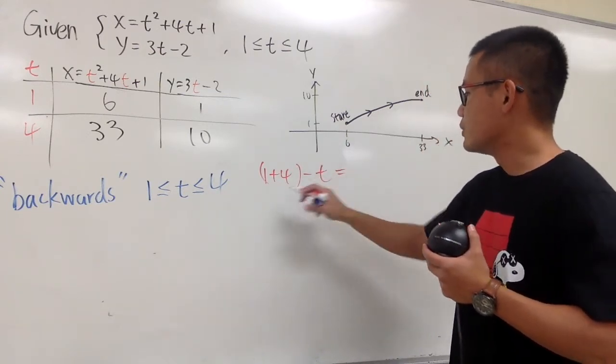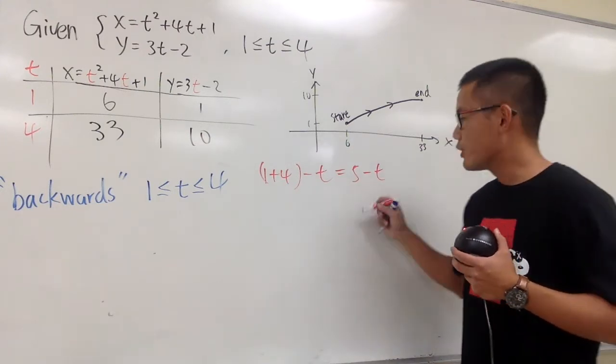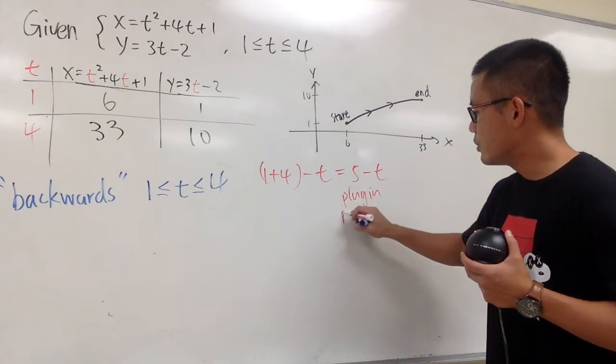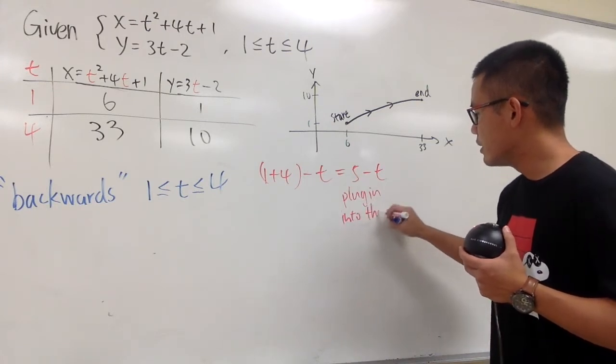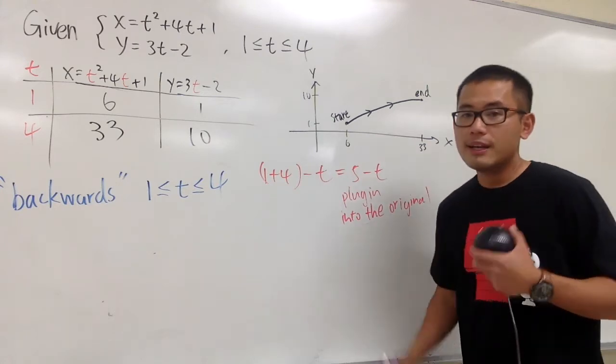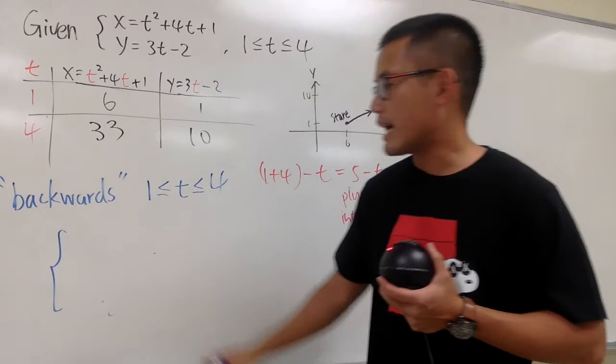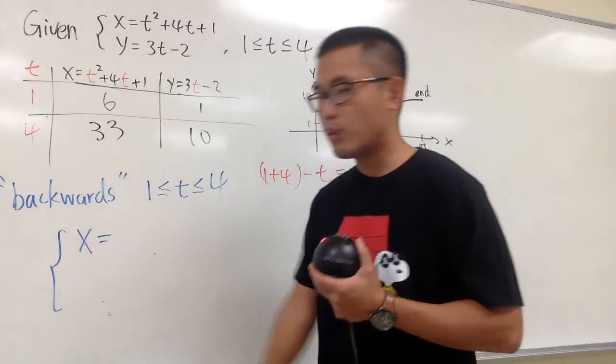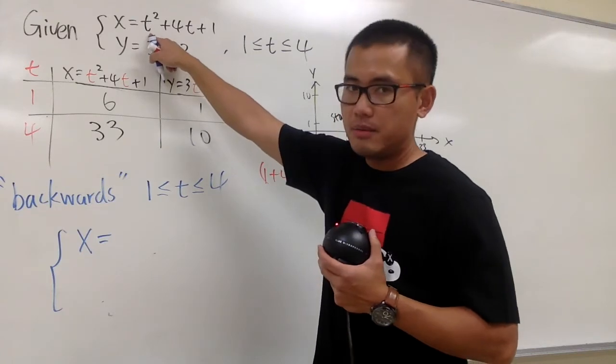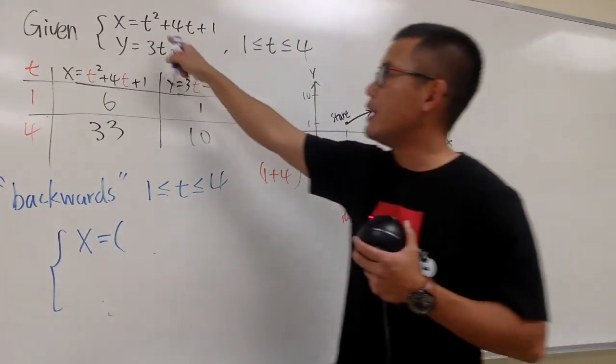This right here, work this out, which is 5 minus t. And you have to plug in this into the original. And that will do it. So with that being said, this is how the new equation is going to look like. I still have the x equation and the y equation. For the x, you see, here I have my t. Well, I just have to plug in 5 minus t into my original t.